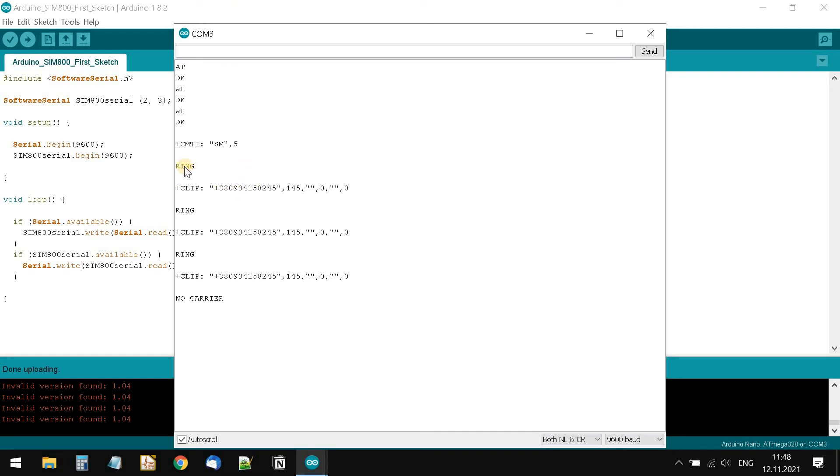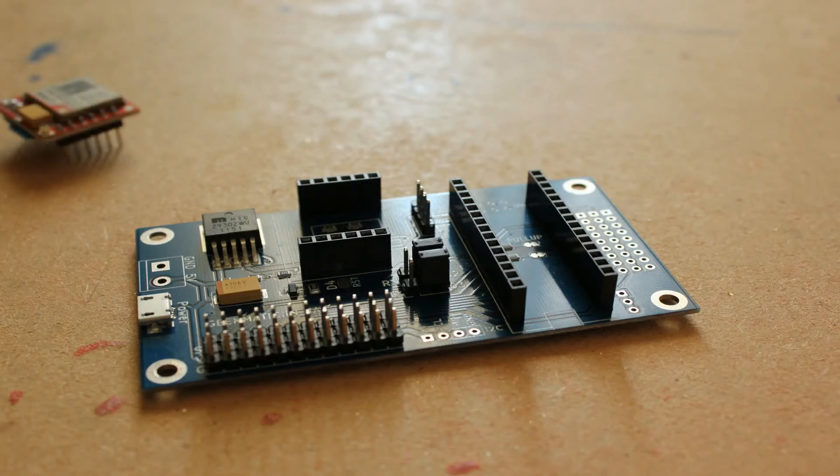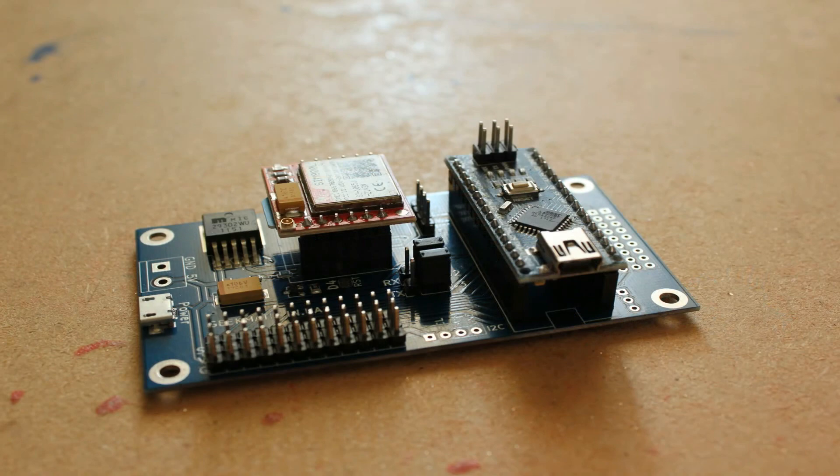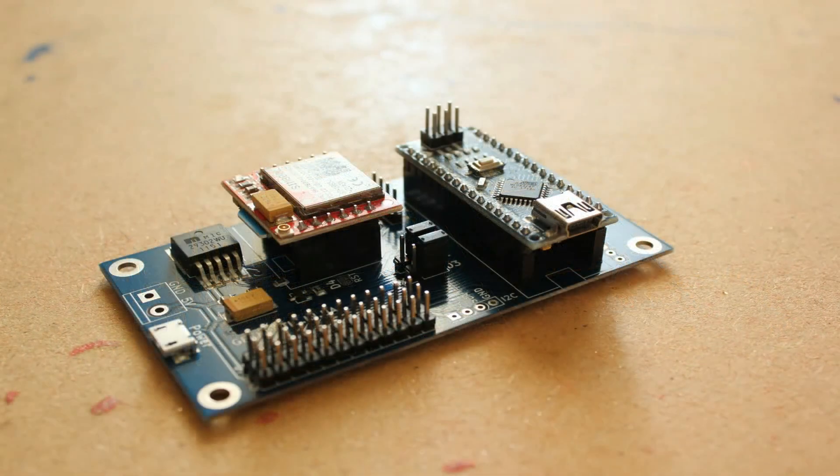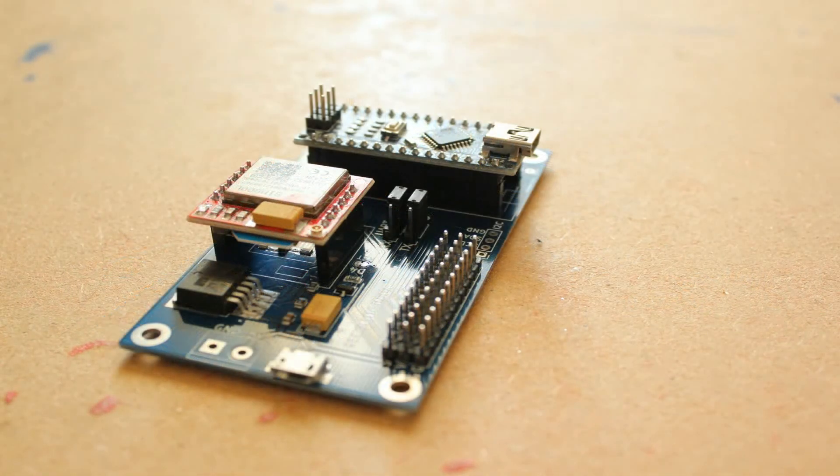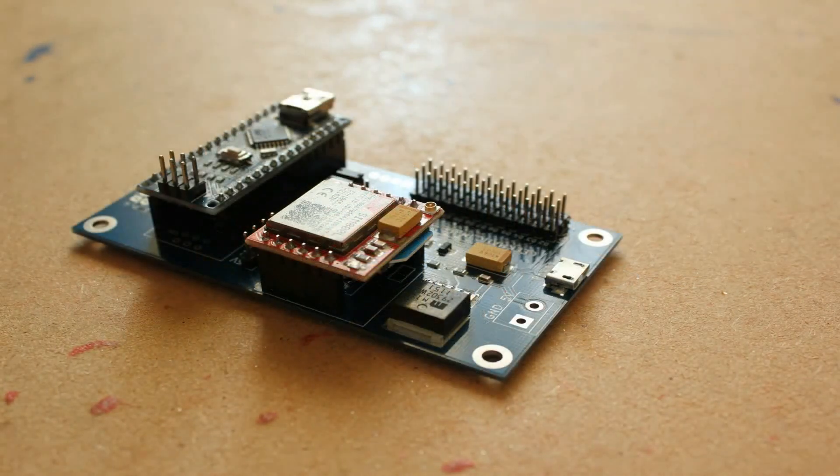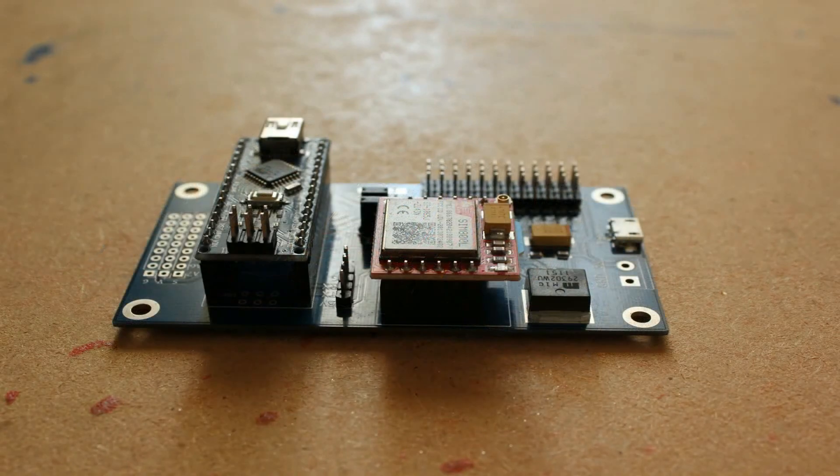This is how we learned how to test the connection of SIM800 to Arduino Nano using a simple sketch. Plus, we got the initial skills of communicating with the GSM module by issuing commands manually in the port monitor. At the next stage, we will prepare pieces of code for automatic control of the SIM800 and submit a couple of diagnostic requests to this module.